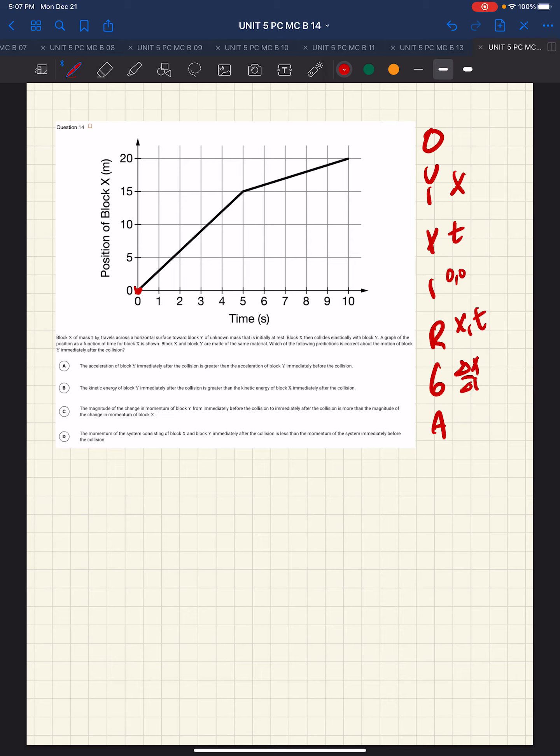The gradient is delta x over delta t, which is the velocity, and the area is meters times seconds, x times t meter seconds, which is nothing useful. So, now we'll see what we have going on.